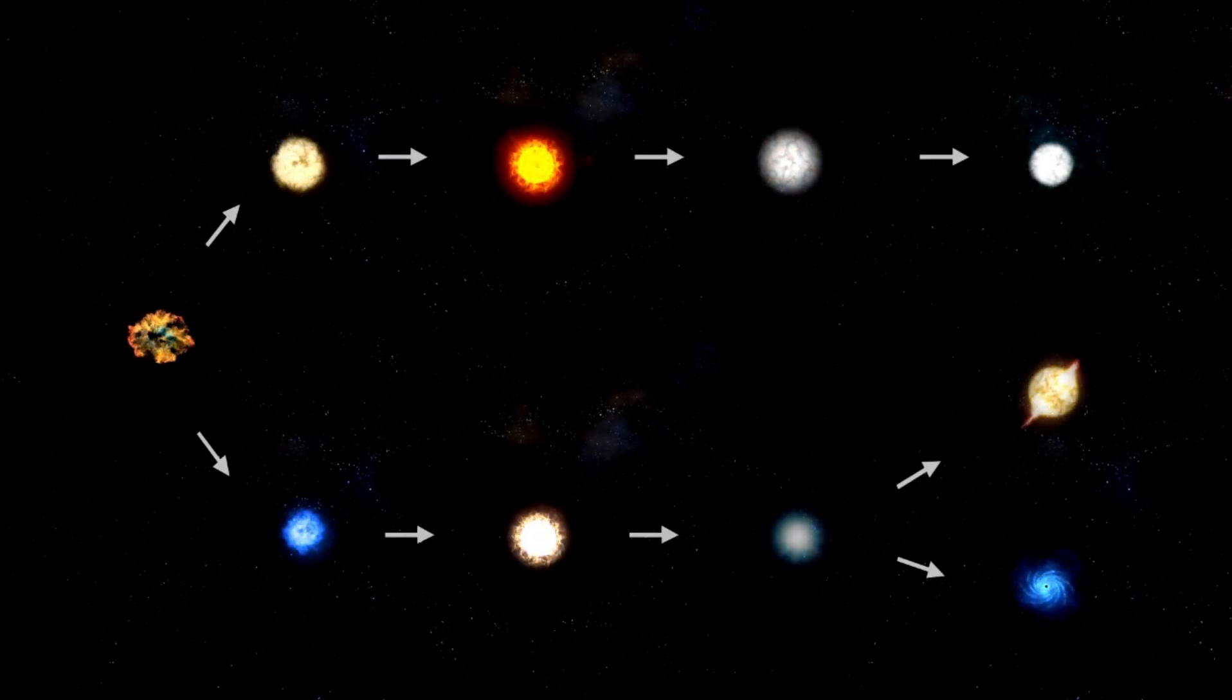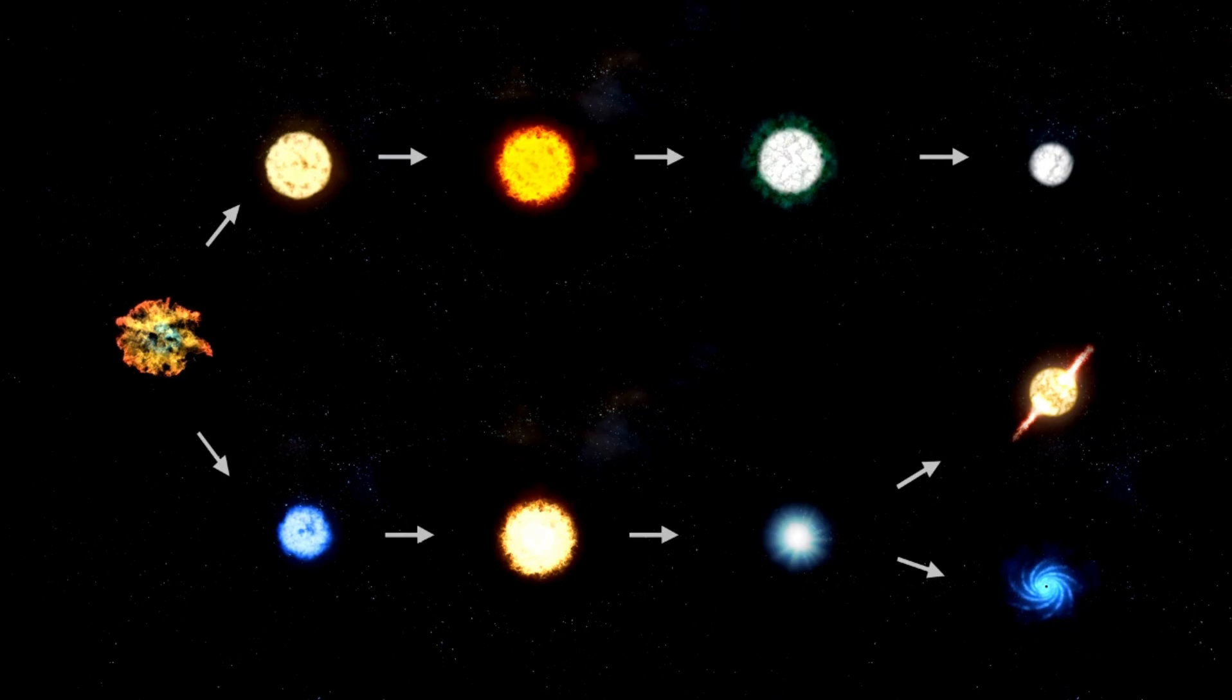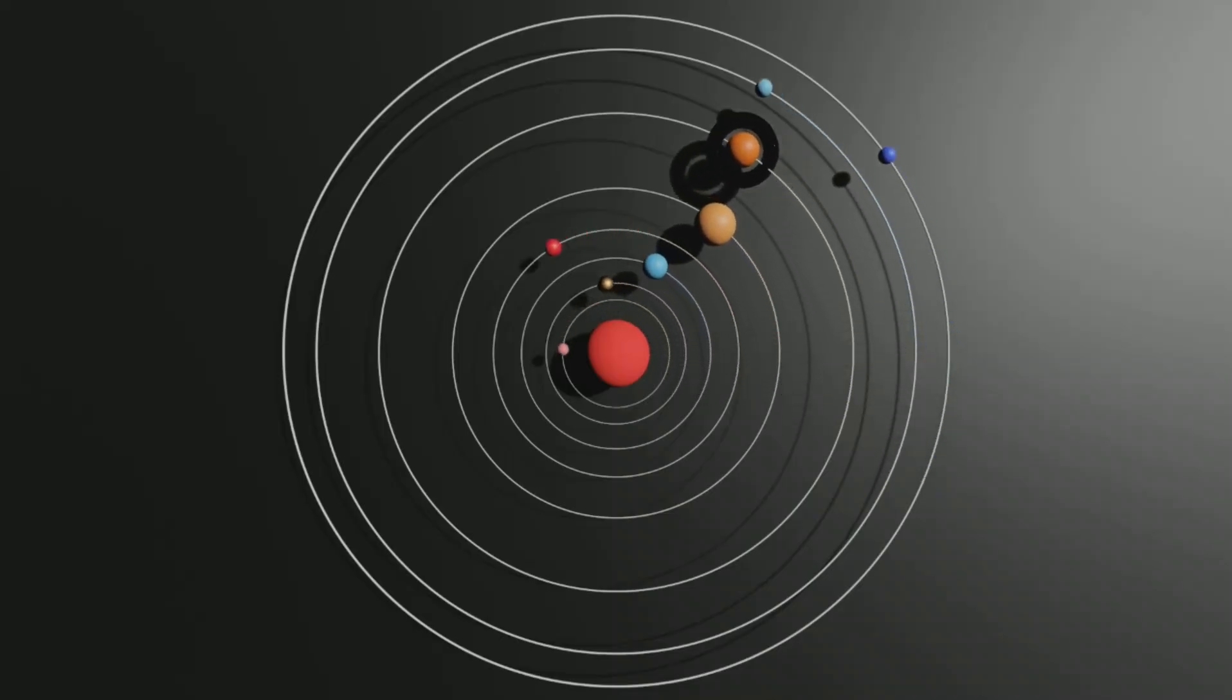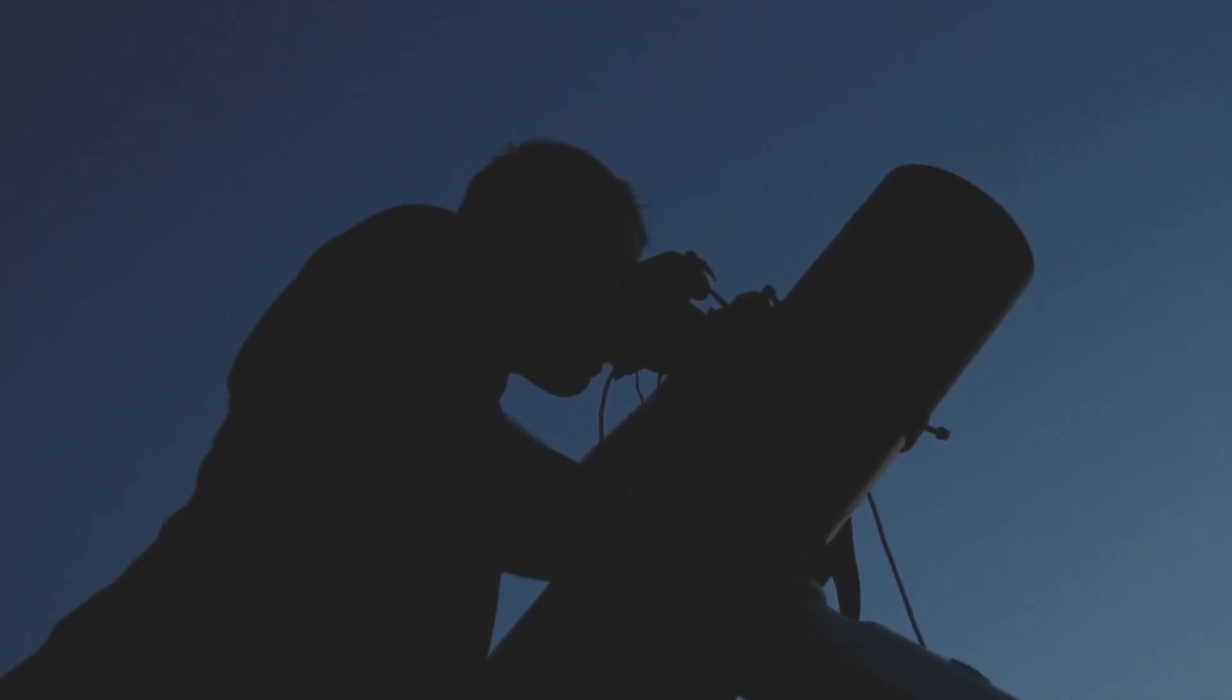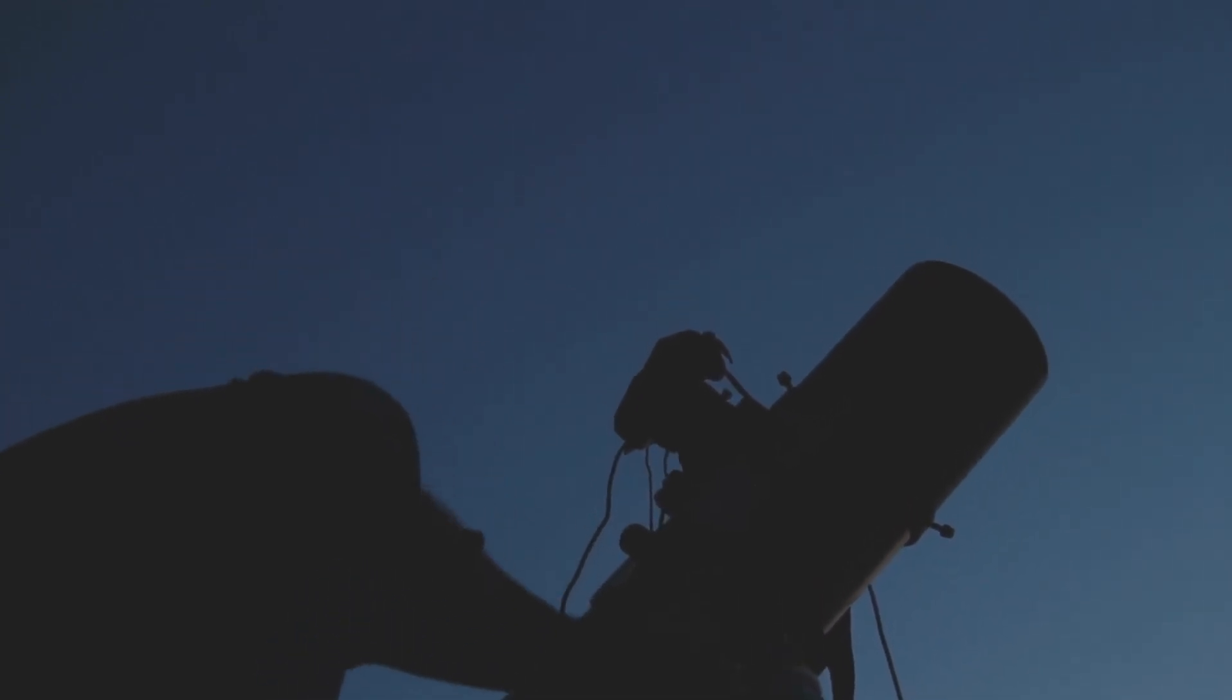could have up to ten times the mass of Earth and twice the radius. But instead of being boiling infernos, they could be warm, watery worlds. These sub-Neptunes could be surrounded by a thick hydrogen-rich atmosphere and, crucially, a massive layer of water, possibly making up as much as 90% of the planet's total mass. This vast ocean could harbor the basic ingredients for microbial life.